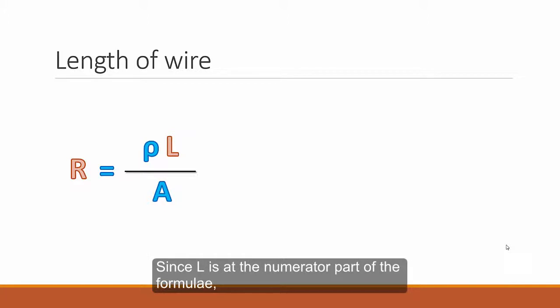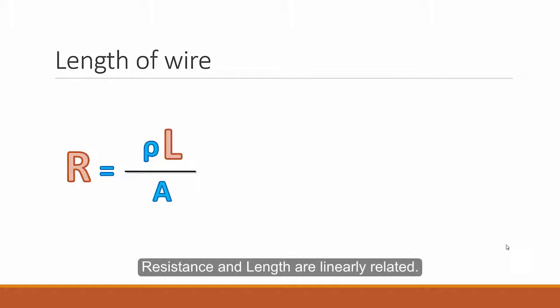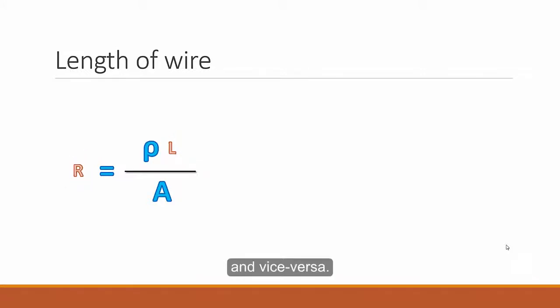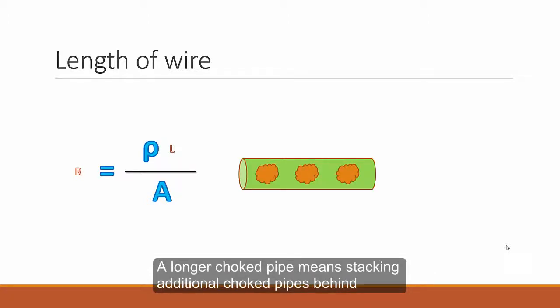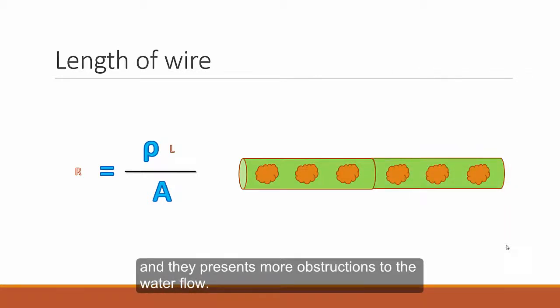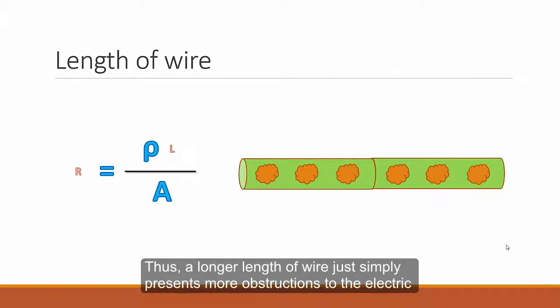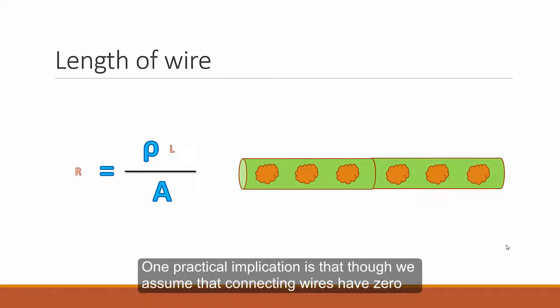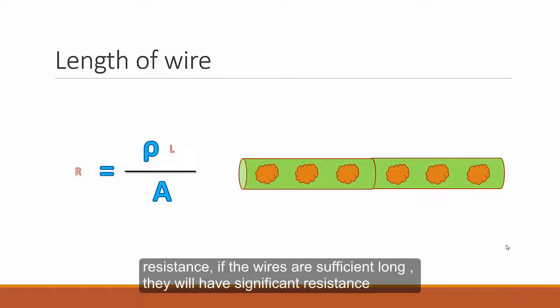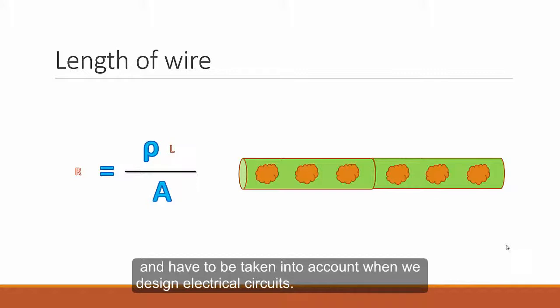Looking at the formula, since L is the numerator part of the formula, resistance and length are linearly related. The longer the wire, the larger the resistance and vice versa. A simple way to remember this is to imagine a choke pipe. A longer choke pipe means stacking additional pipes behind and they present more obstruction to the water flow. Thus, a longer length of wire simply presents more obstruction to the electric current flowing. One practical implication is that though we assume that connecting wires has zero resistance, if the wires are sufficiently long, they would have significant resistance and would have to be taken into account when we design electrical circuits.